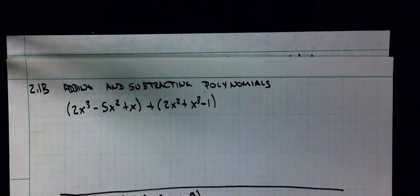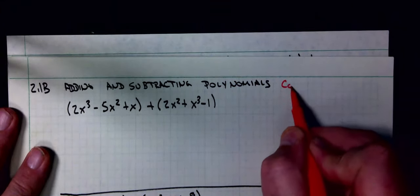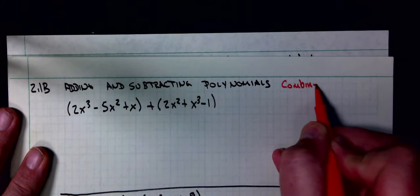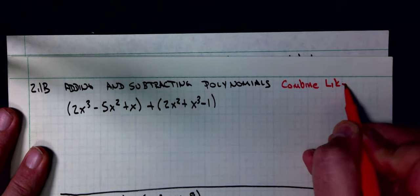The next thing we need to cover is adding and subtracting polynomials. You have already been doing this. Basically, what we want to do is we want to find like terms.